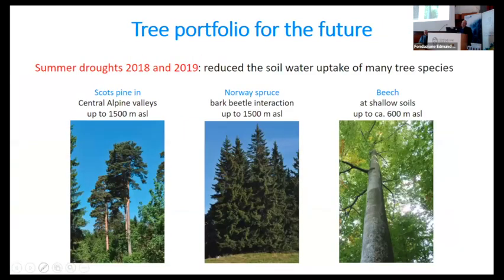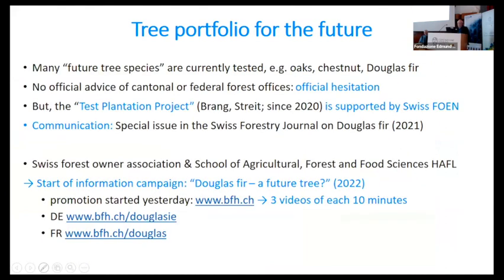In summary, we have problems with three widespread species — Scots pine, Norway spruce, and beech — up to elevations of 600 meters right now. Beech does not pose too big a problem at the moment, but this can change with increasing temperatures.